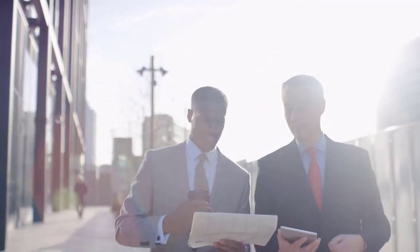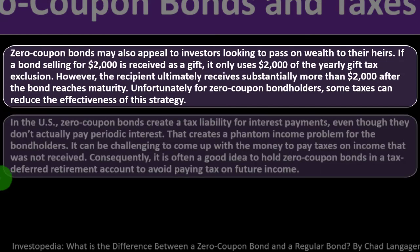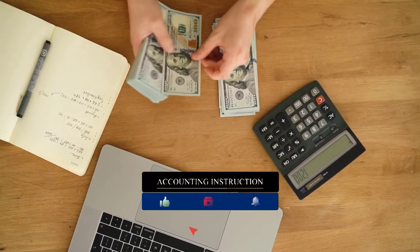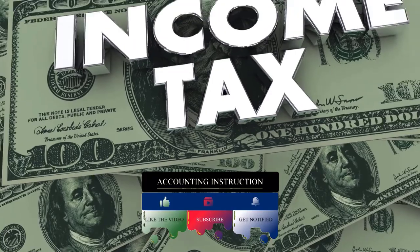However, the recipient ultimately receives substantially more than $2,000 after the bond reaches maturity. Unfortunately, some taxes can reduce the effectiveness of this strategy. In the U.S., zero coupon bonds create a tax liability for interest payments even though they don't actually pay periodic interest — that creates a phantom income problem for bondholders. It can be challenging to come up with the money to pay taxes on income that was not actually received in cash.